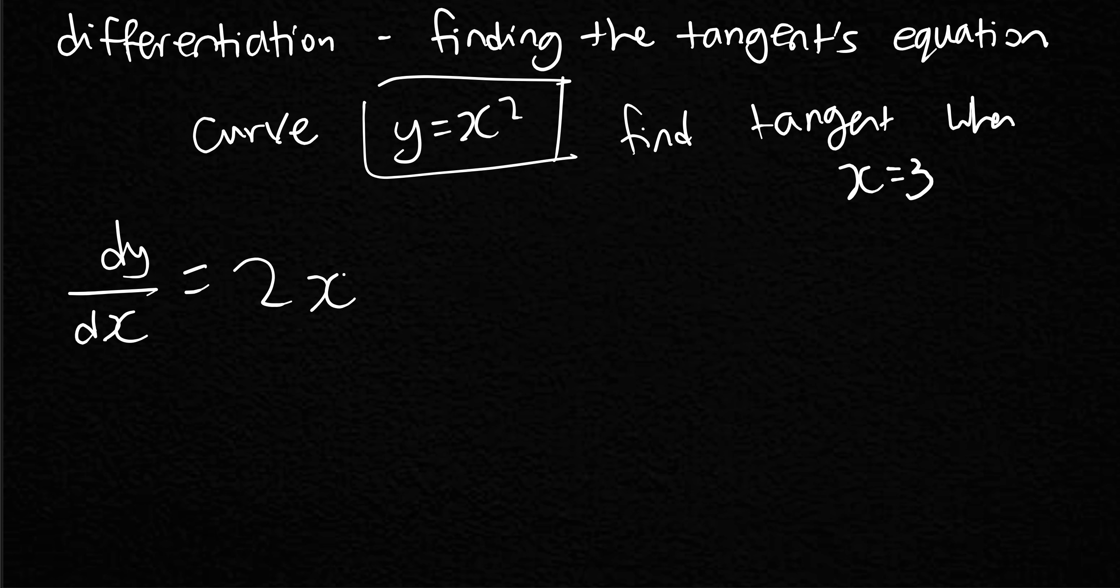The gradient function is 2X. So we have X value of 3. So when X is 3, we sub in X equals 3. So 2 times 3 is equal to 6 equals M. That is the gradient to the curve where X is 3. That means the gradient of the tangent is also going to be 6.